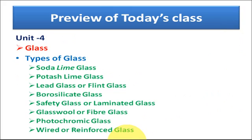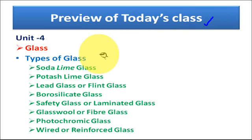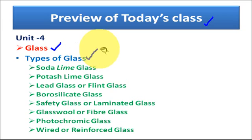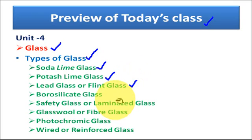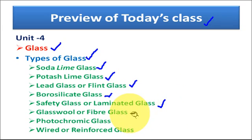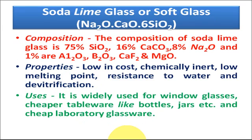In today's class, we are continuing with the topic of glass and will cover the various types of glass, which include: soda lime glass, potash lime glass, lead glass (also called flint glass), borosilicate glass, safety glass or laminated glass, glass wool or fiberglass, photochromic glass, and wired or reinforced glass.